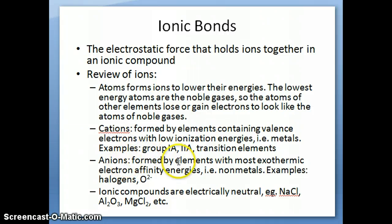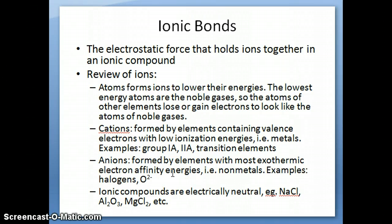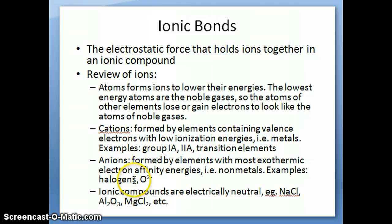Anions are on the opposite side of the periodic table. They're formed by elements that have very exothermic electron affinity energy. Electron affinity is a process representing the gain of an electron; when you gain an electron, you lower the energy state of the system. So when anions form, they get to a lower energy. Species that like to form anions are particularly the non-metals — for example, all the halogens: fluorine and chlorine tend to form the anion forms fluoride and chloride. Oxygen can form the oxide anion O²⁻.